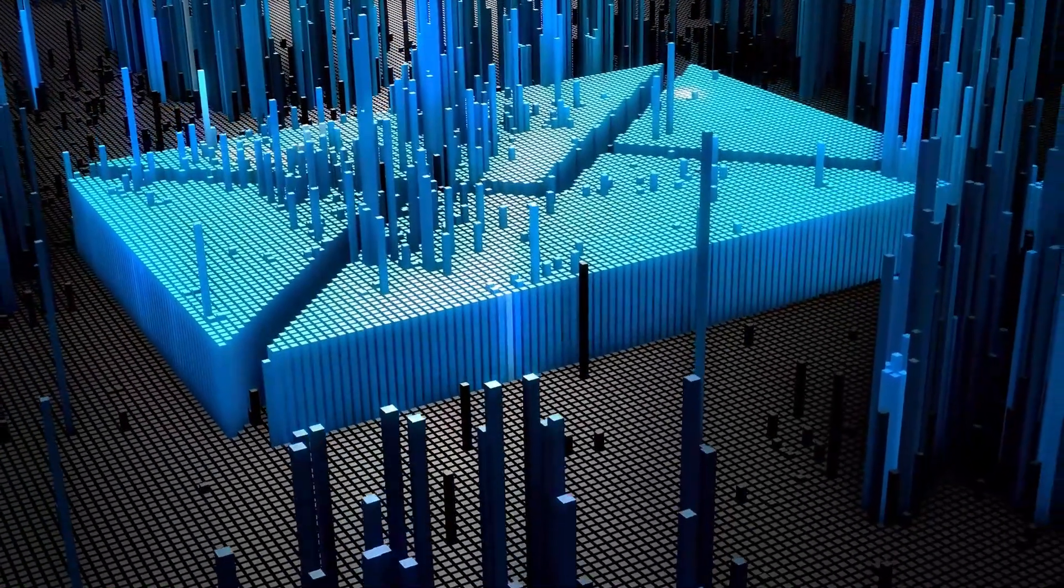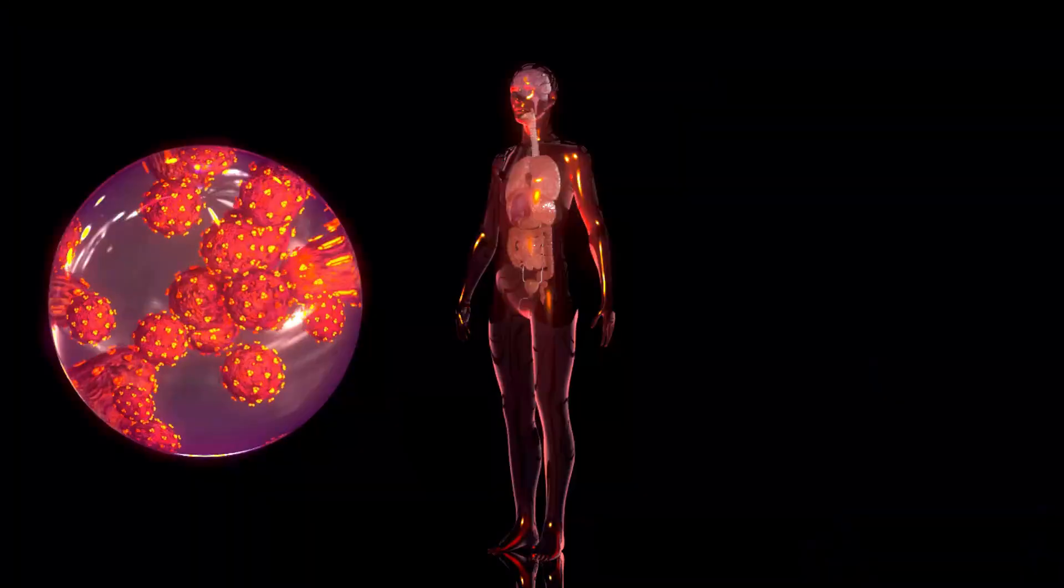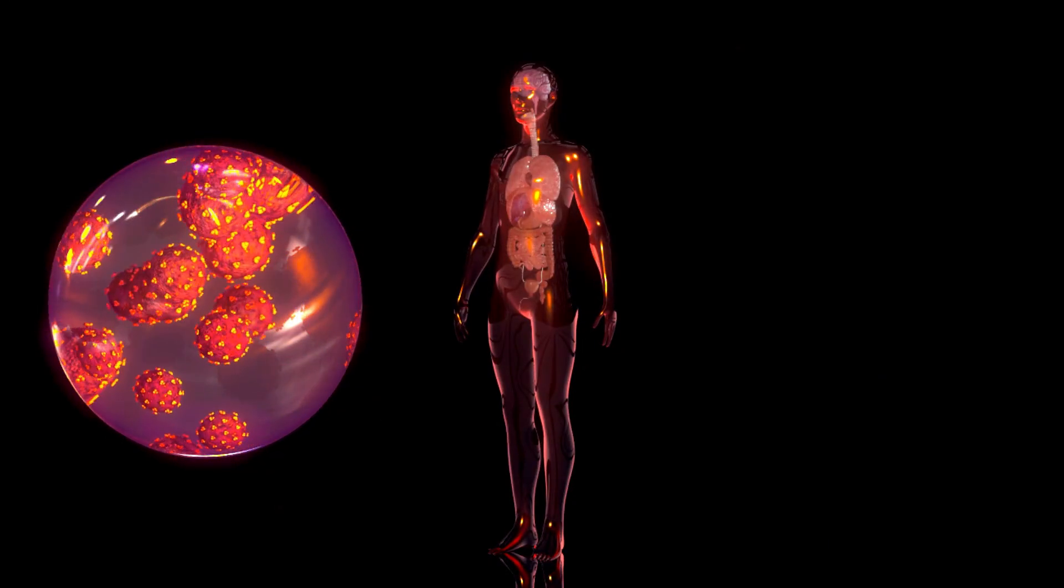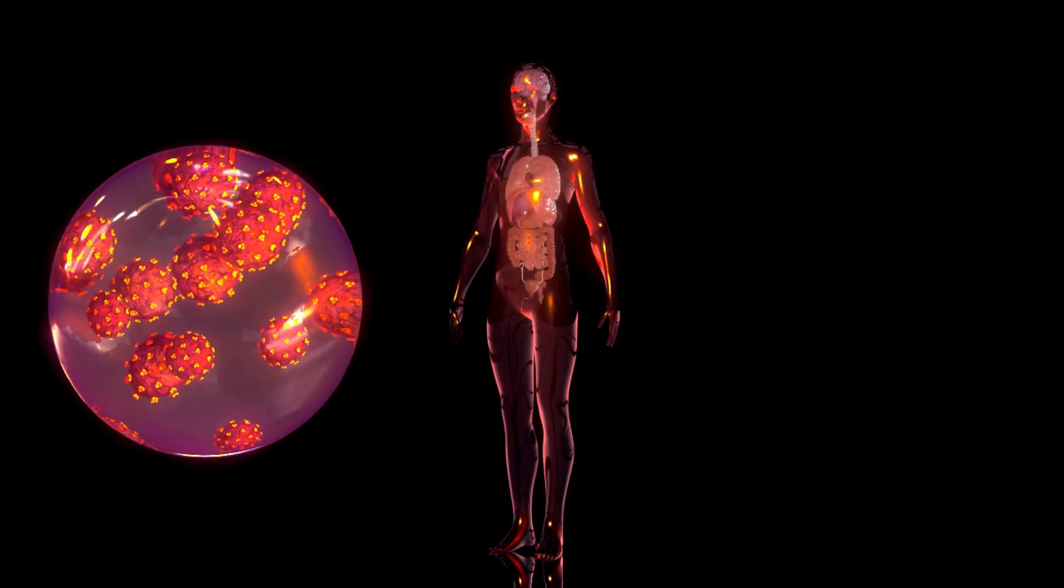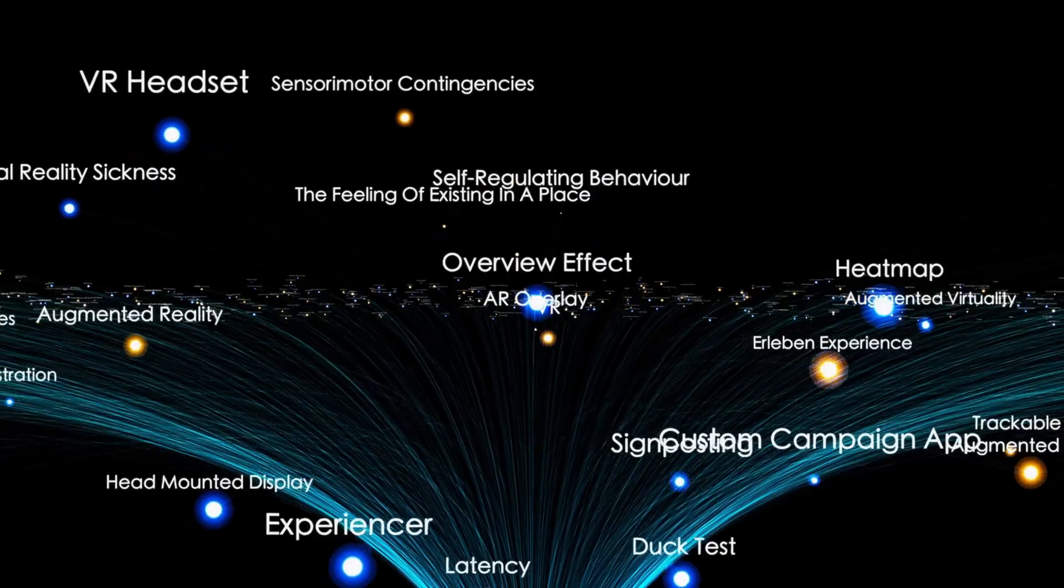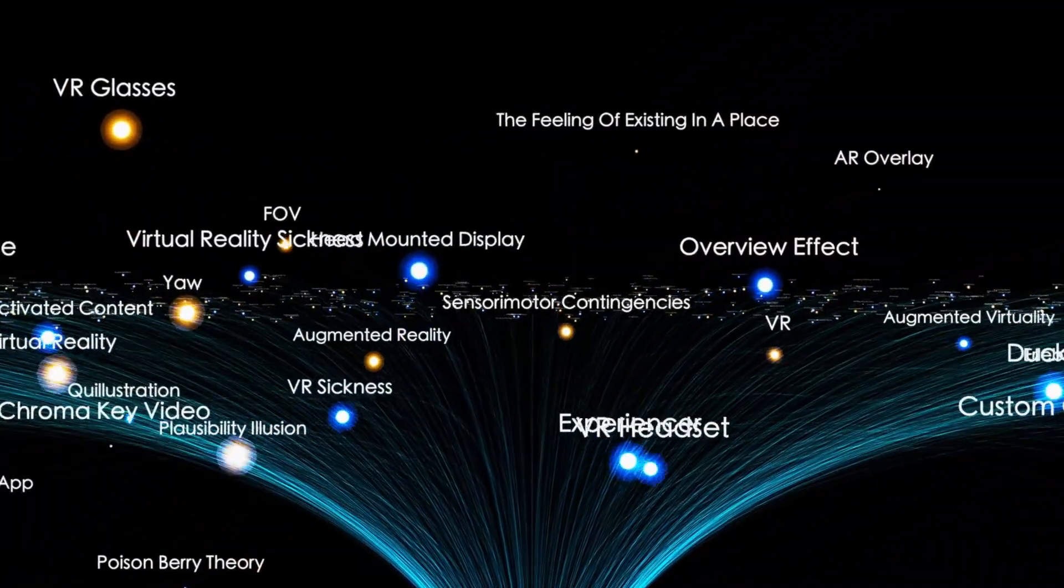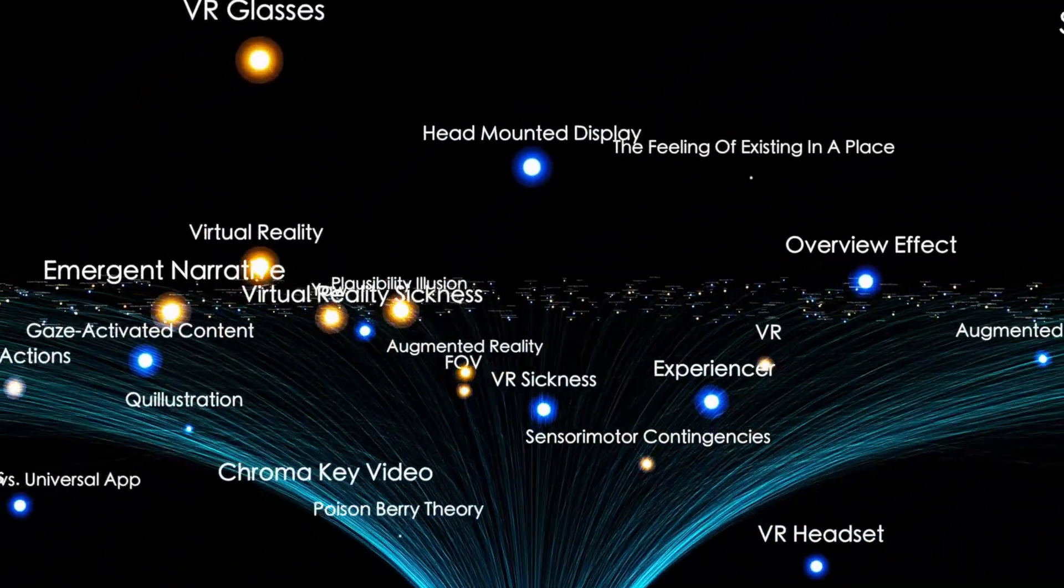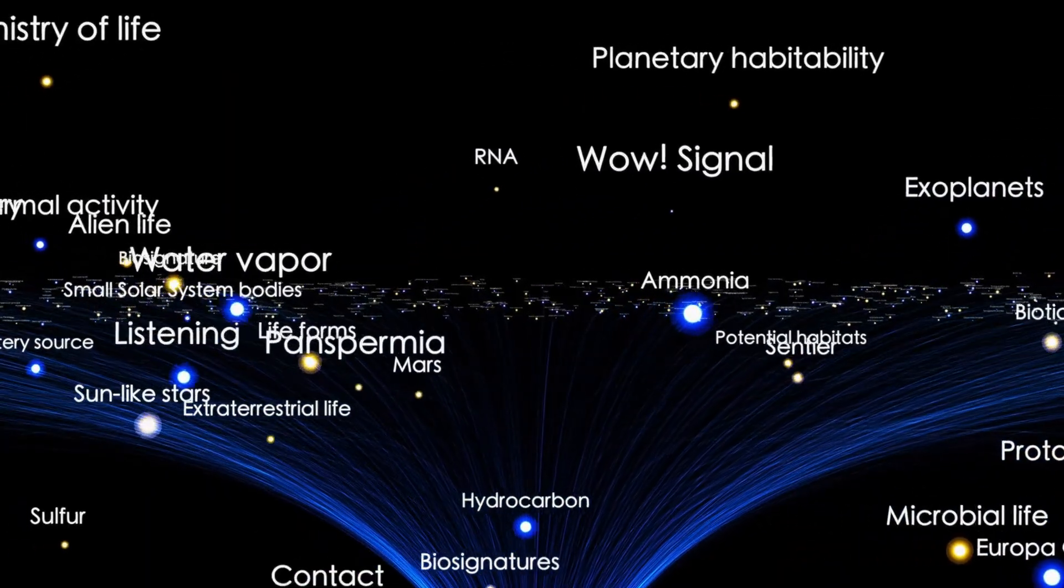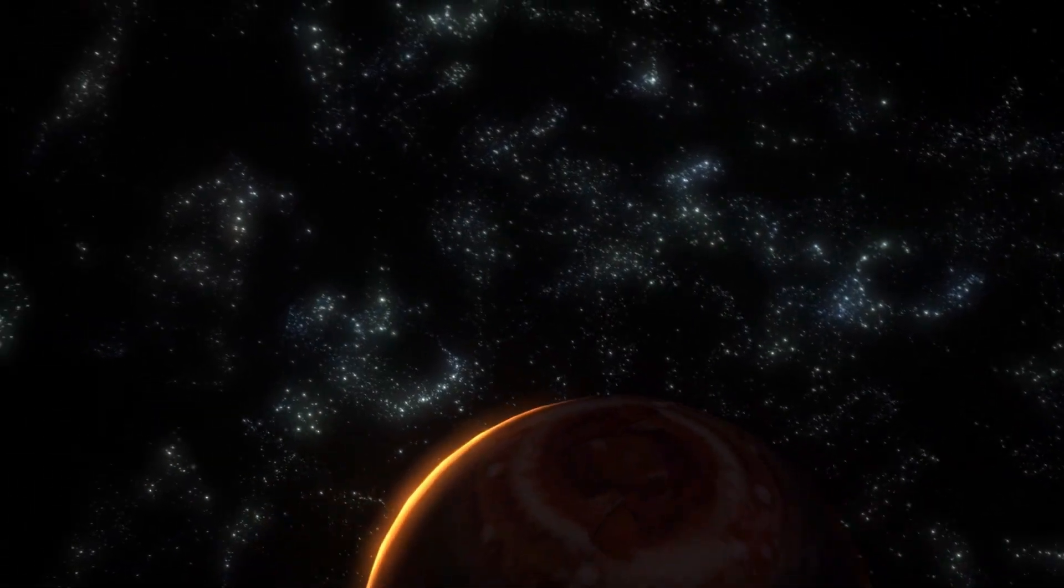Recently, observations from the James Webb Telescope have sparked global excitement and debate. As the telescope focused its powerful optics on Proxima B, researchers detected a strange and fascinating phenomenon: light emissions emanating from the planet's perpetually dark side.